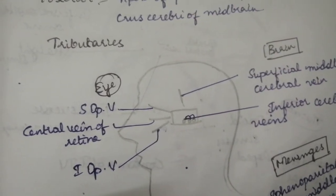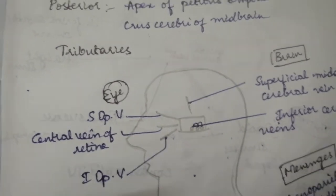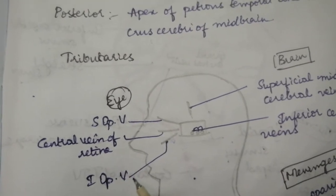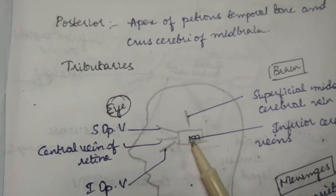You are having superior ophthalmic vein and central vein of retina and lower you have inferior ophthalmic vein. These are your tributaries from your eye region.